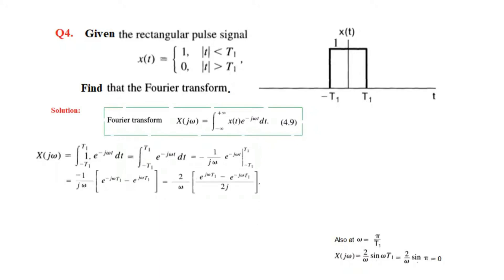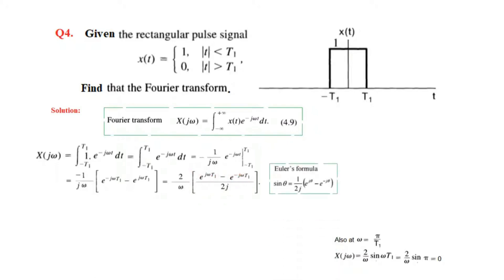We can write this in a different form — we multiply and divide by 2, and bring the j inside. We do this because this matches the Euler formula. The Euler formula states that sine of θ equals e to the jθ minus e to the minus jθ, divided by 2j. This expression is exactly that same form.